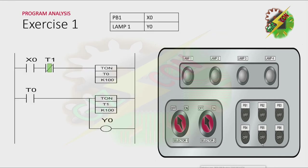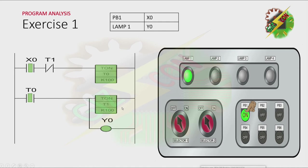This will be my answer to this exercise. Let's analyze this program first. I will press PB1 and because X0 is now energized, T0 will turn on after one second. Then T0 is activated and that will make all the contacts of T0 to change.